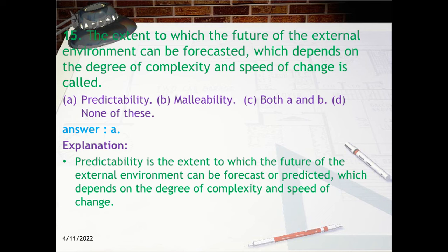Explanation: Predictability is the extent to which the future of the external environment can be forecasted or predicted, which depends on the degree of complexity and speed of change.